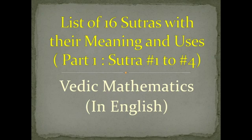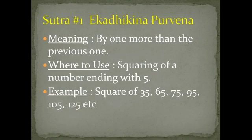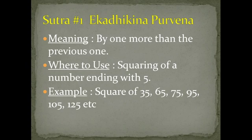Sutra 1 is Ekadhikina Purvena. The meaning of this Sutra is 'by 1 more than the previous one.' We can use this Sutra to find the square of a number ending with 5 — for example, you can find the square of 35, 45, 65, 75, 105, 125, or 145 in a very easy way using this Sutra.